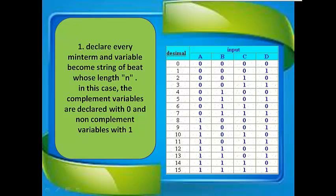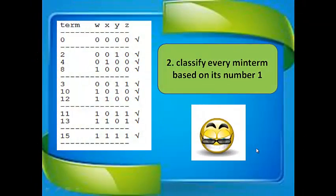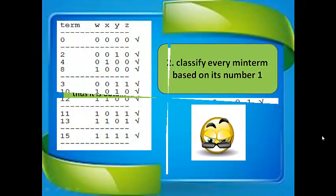In this case, the complement variables are declared with 0 and non-complement variables with 1. Step 2: Classify every minterm based on its number of 1s.